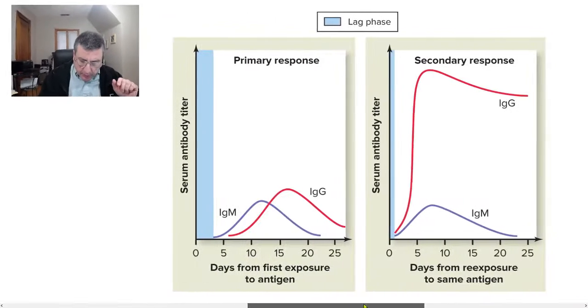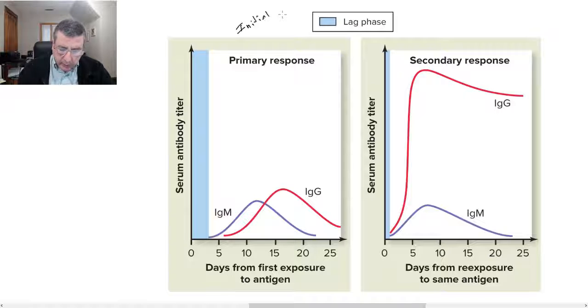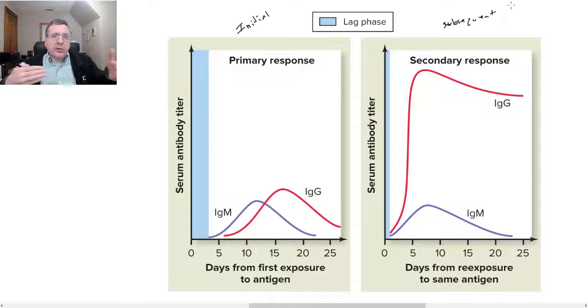And let me bring up this table here that I got out of your book. So here's your initial exposure, which is going to be on this left-hand side. So this is initial, and this is subsequent. Those are different exposures. So let's just look at this initial one first, which leads into what is your primary response to the initial exposure.